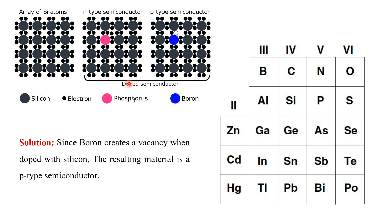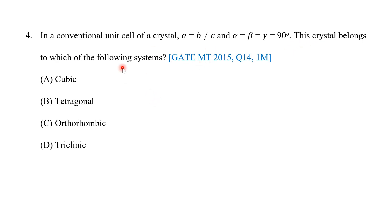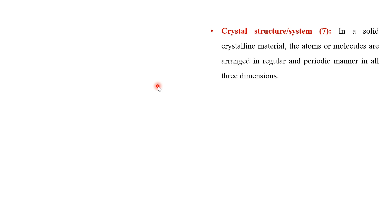Now let us move on to the fourth and final question of this week. It was asked in GATE 2015 for one mark: in a conventional unit cell of a crystal, a = b ≠ c and α = β = γ = 90°. The crystal belongs to which of the following systems? The seven crystal systems and 14 Bravais lattices are fundamental to every materials science course — you typically learn this in the first week.